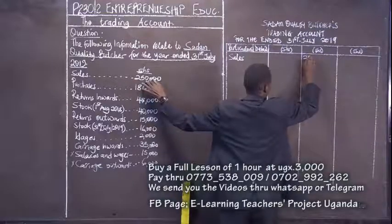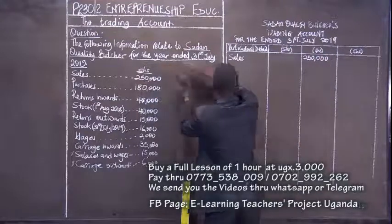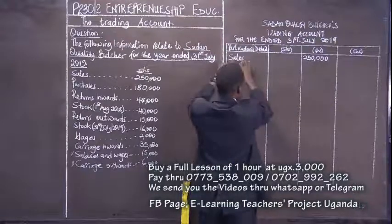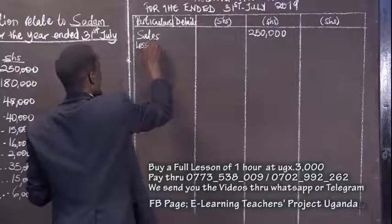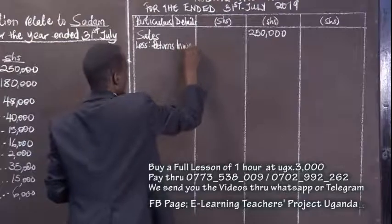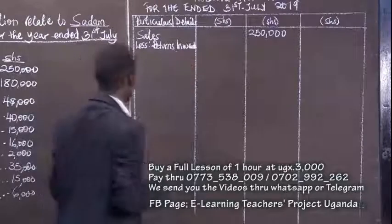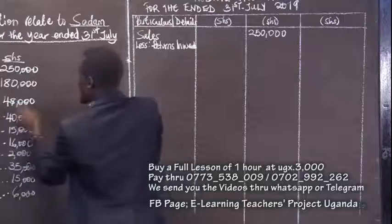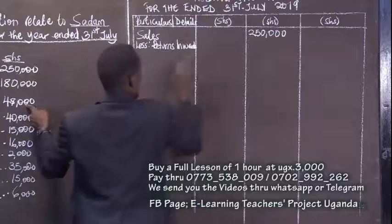We pick the figure as it appears in the question and put it exactly here in this column. After entering the figure for sales, we now say less returns inwards. Inwards means the goods that have been returned back into the business. When we look at our question, we have a figure for returns inwards exactly here, so we are going to pick this figure of returns inwards.